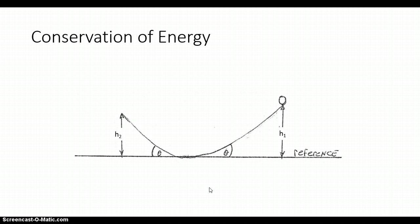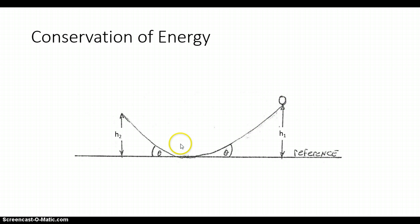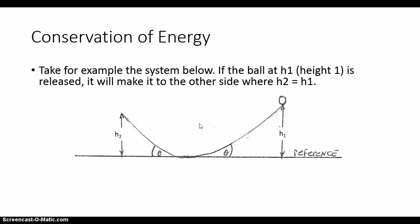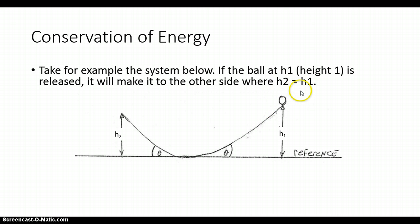Now that we understand what total mechanical energy is and what conservation of energy means for a mechanical system, let's take a look at an example. In this example, we have a track with a U-shape, and we have a ball being released from the top of the track. If the ball on this side has a height H1 and it is released, it will make it to the other side where H2 is equal to H1, if the system is conservative.